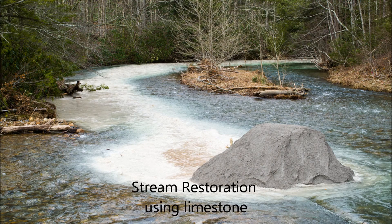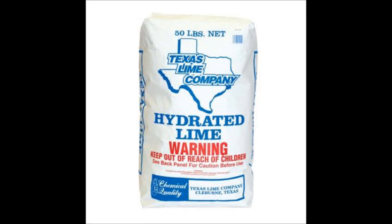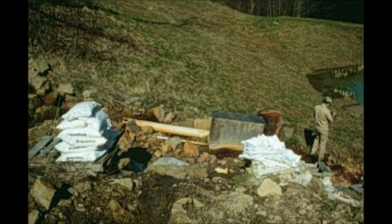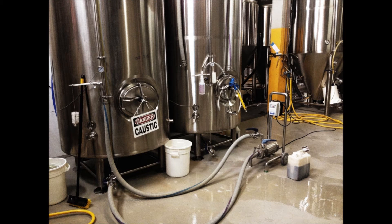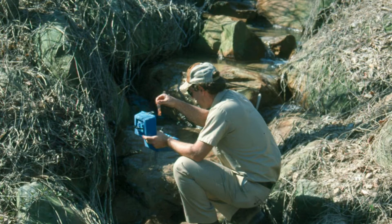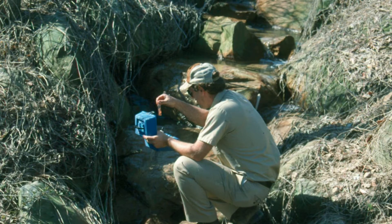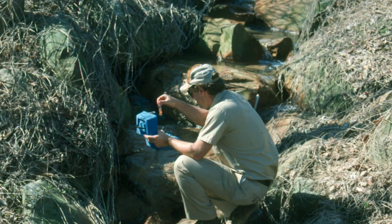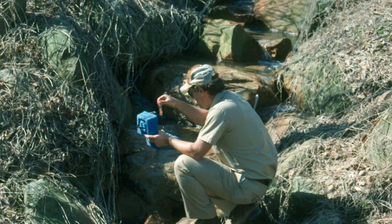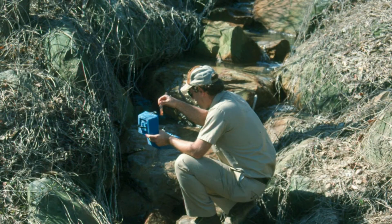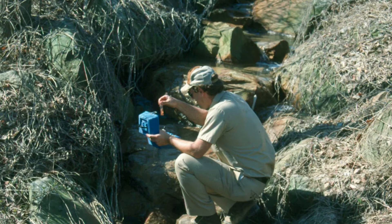There are multiple chemicals available for the treatment of acid mine drainage including limestone, hydrated lime, pebble quick lime, soda ash, sodium hydroxide or caustic soda, and ammonia. Each chemical has a set of conditions where it will work better than another chemical option. Technical factors that play a role in the chemical treatment choice are acidity levels, flow, the metal concentration, and the desired final water quality.